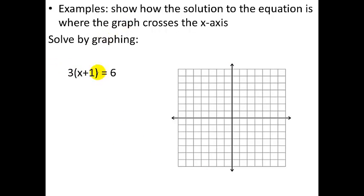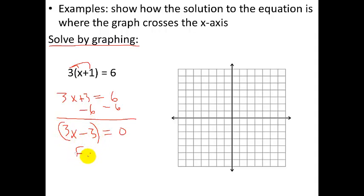We're going to apply this example to 3 parentheses x plus 1 equals 6. We're going to solve by graphing. The first thing we want to do is clear the parentheses. So here we're going to get 3x plus 3 equals 6. Then we need to get a 0 on the right-hand side. So we're going to subtract 6 from both sides. We're just setting it up right now. So we have 3x, 3 minus 6 is negative 3, 3x minus 3 equals 0. We have an expression here, a function of x, and it's equal to 0.